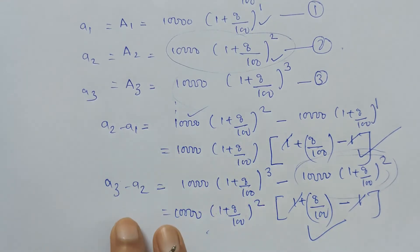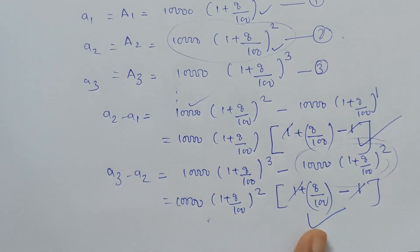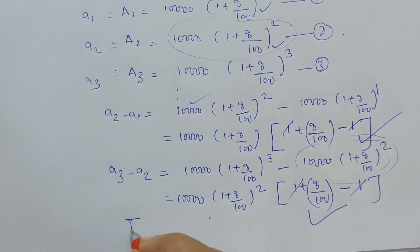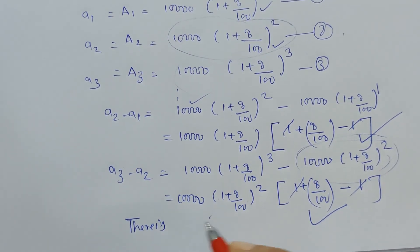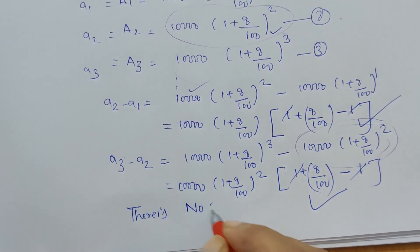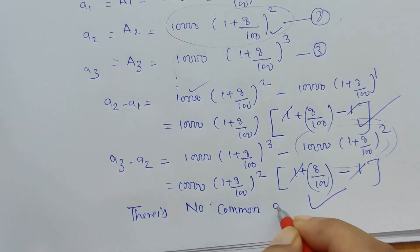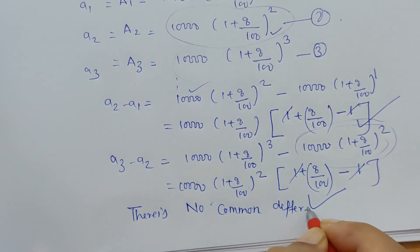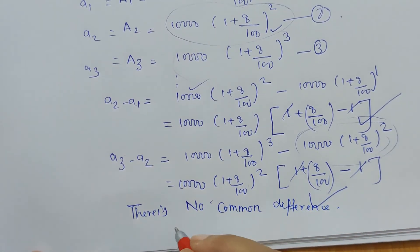So a₂ - a₁ is not equal to a₃ - a₂. So it does not have any common difference. There is no common difference. Therefore,